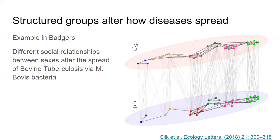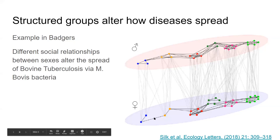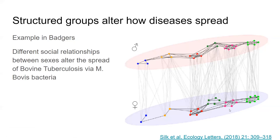This example is in badgers. The bacteria is M. bovis, which results in bovine tuberculosis. In this picture, what you see is called a multilayer network. The red circles are female badgers, blue circles are male badgers. They're grouped into different social networks, different communities, and there are links between the communities that evolve and change over time.